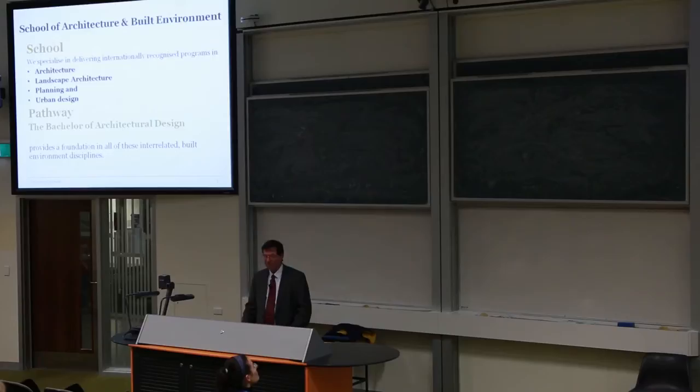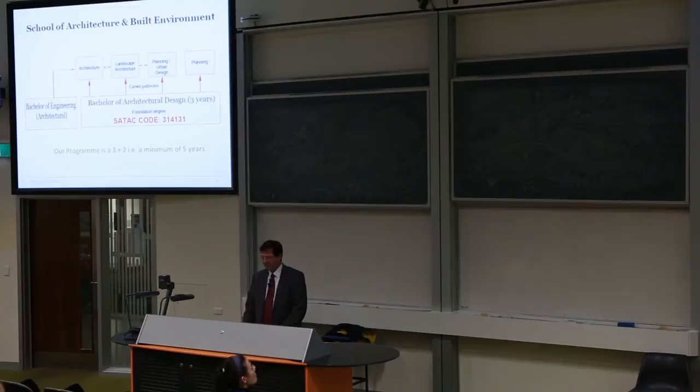So my school, the School of Architecture and Built Environment, specializes in delivering those programs in architecture, landscape architecture, planning and urban design. The pathway to each of those careers is through our three year undergraduate degree known as the Bachelor of Architectural Design, which provides all the foundation studies you require to be successful in those fields. This diagram articulates that quite well. There's a three year Bachelor of Architectural Design, the foundation degree.